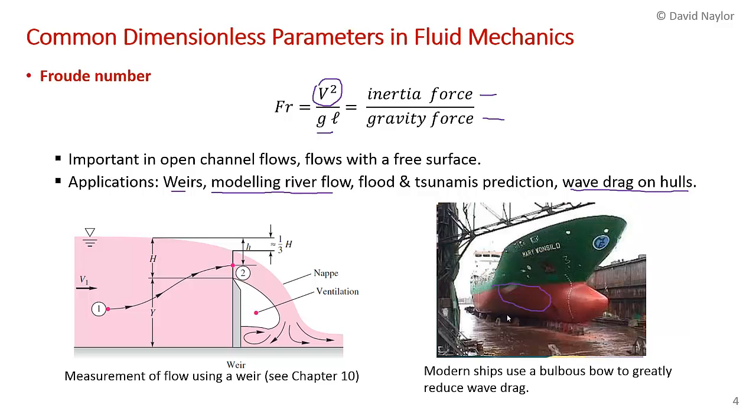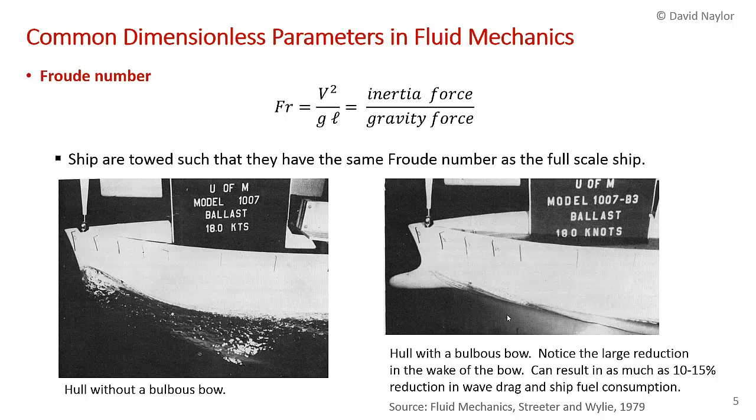An interesting application is that modern ships have a bulbous bow that's just slightly below the waterline, so you may never have seen this before. This greatly reduces the wave drag. Here's a picture of a ship with a hull going at 18 knots. You can see the disturbance, the bow disturbance here, the big wave that's generated. That generates drag on the hull.